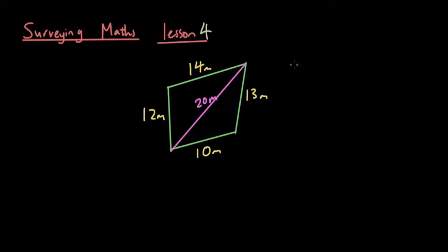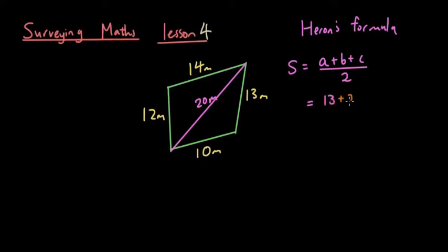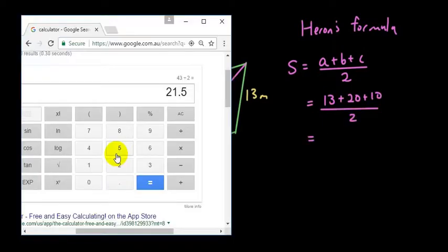So then you just go S, remember Heron's formula. So I'll write it out again. Heron's formula S equals the three sides added together. So A plus B plus C, the three sides added together divided by 2. So it's 13 plus 20 plus 10 divided by 2. And the answer is 21.5.